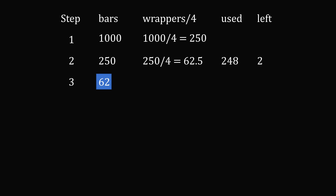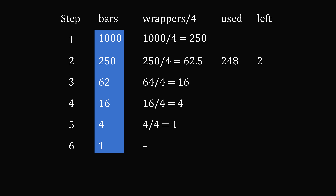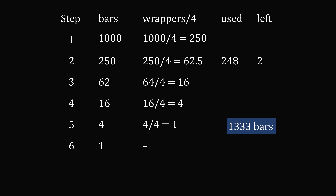Then Charlie takes those 62 wrappers with the 2 leftover wrappers, making a total of 64 wrappers. 64 divided by 4 gives 16 more chocolate bars. Then 16 is divisible by 4, giving 4 more for the next step. Then 4 divided by 4 is 1, so in the final step he gets 1 more bar, and that's it. The total number of chocolate bars is the sum of all those values, which works out to 1,333 chocolate bars.